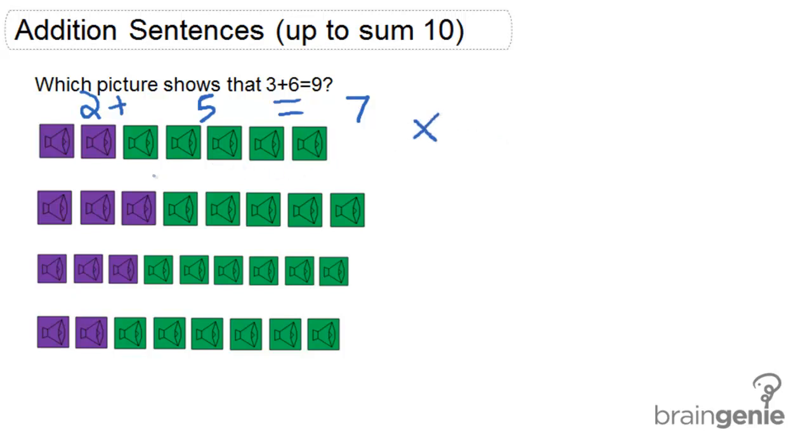Let's take a look at the next option. 3 purple speakers plus 1, 2, 3, 4, 5 green speakers equals 8. This is also wrong.